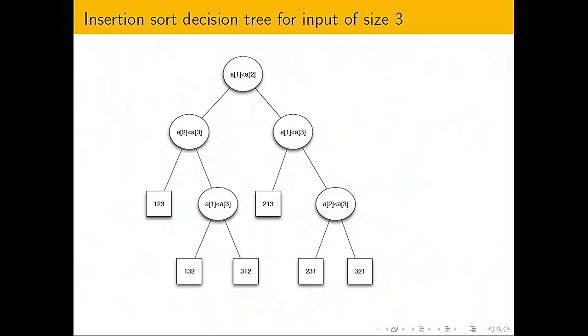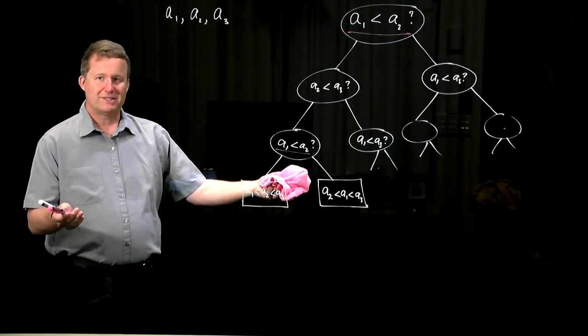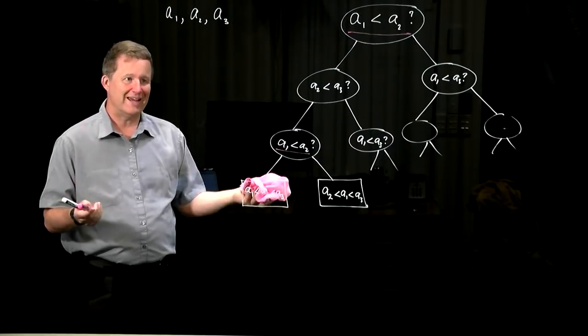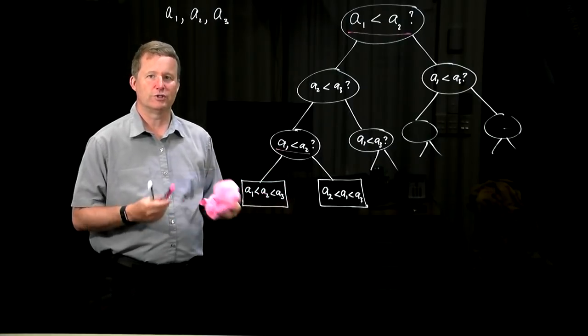Similarly for the right side of the tree, and the key thing to notice here is that the leaves, the square nodes, are not all at the same depth. What that means is that number of comparisons required depends on the input, unlike selection sort. So that's a particular algorithm for a particular value of n. You'd have a bigger tree for bigger n, and obviously different algorithms would give different trees.